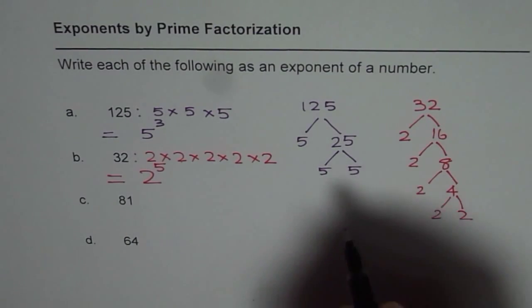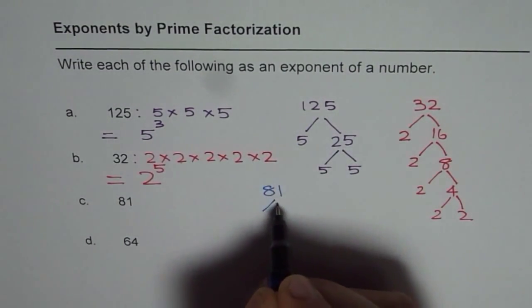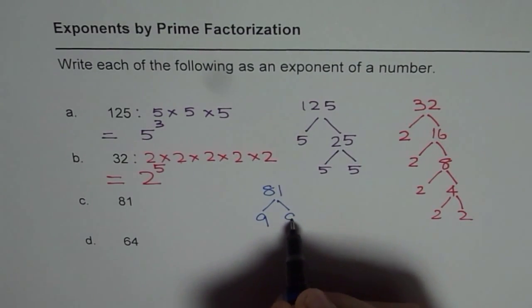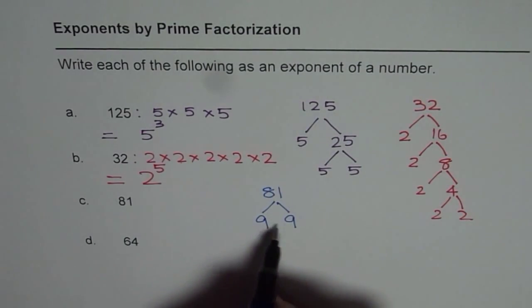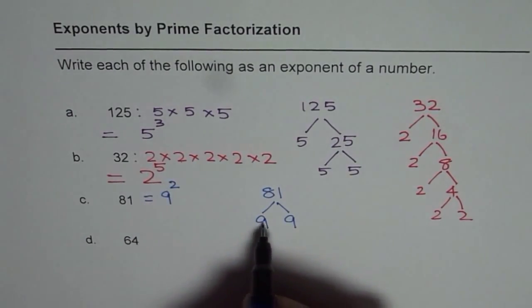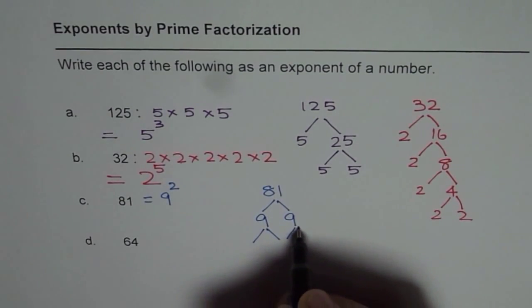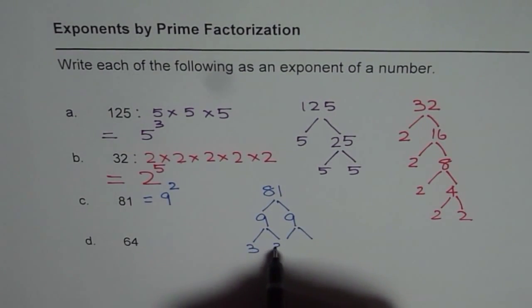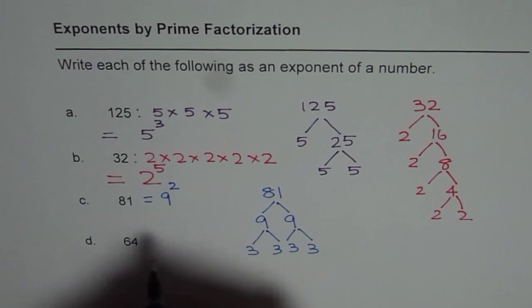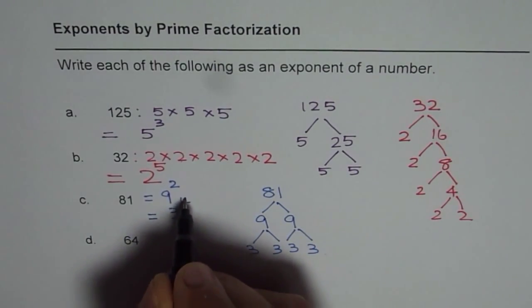81, okay. So 81 is 9 times 9 is 81. You know that. So we can also write 81 as 9 square, right? 9 times 9, okay. Let's further divide 9's. So 3 times 3 is 9, 3 times 3 is 9. So how many 3's? Four 3's. So we can also write this as 3 to the power of 4, 3 times 3 times 3, do you see that?